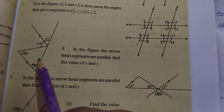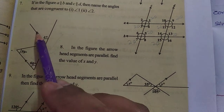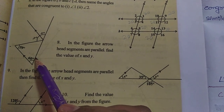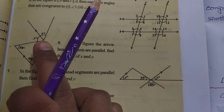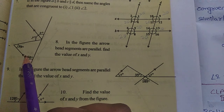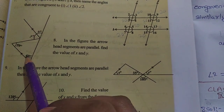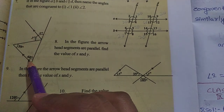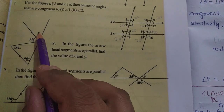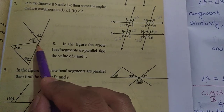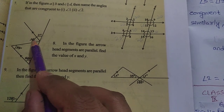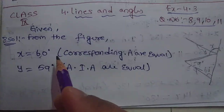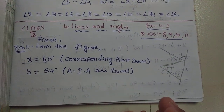Here in the figure, the arrowhead segments are parallel, with a remaining line E as the transversal line, and we need to find x and y values. These two lines are parallel, so one is the interior side and one is the exterior side. These are corresponding angles. x is equal to 60 degrees — corresponding angles are equal. From the figure, x is equal to 60 degrees and y is equal to 59 degrees.